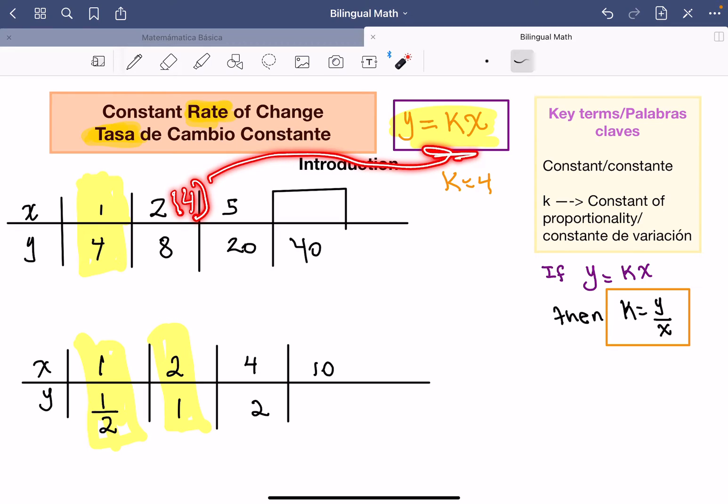This is what I'm doing. Two times four, eight. Five times four equals 20. So that means my constant rate of change is going to be four.